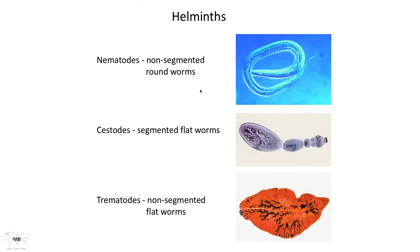We have nematodes, which are non-segmented roundworms. Now we can all think of a segmented roundworm — the annelids, the worms that are found in the ground, earthworms. Nematodes are different, but some of these also live in the ground. We'll see about that in a minute.